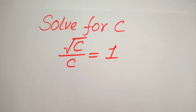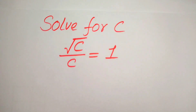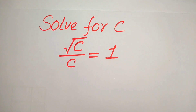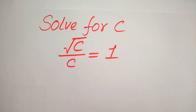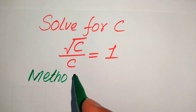Hello everyone. How to solve this problem for the values of C, if we have square root of C divided by C equals 1. We will solve this problem for all the values of C, and at the last we will check which of these values are solutions and which are extraneous roots. We will also solve this problem using two methods.